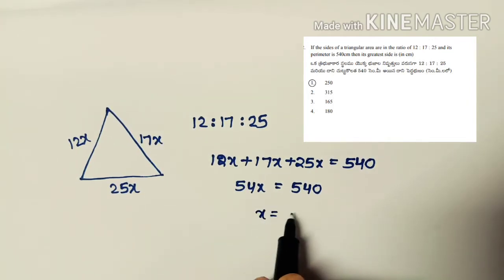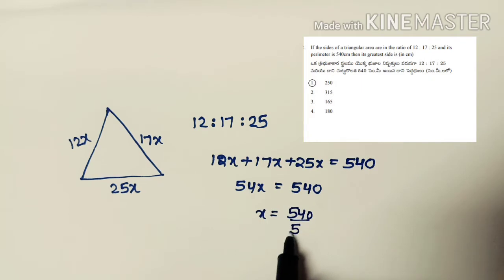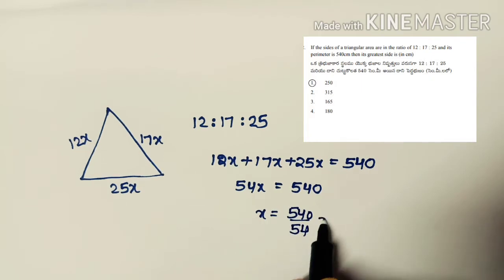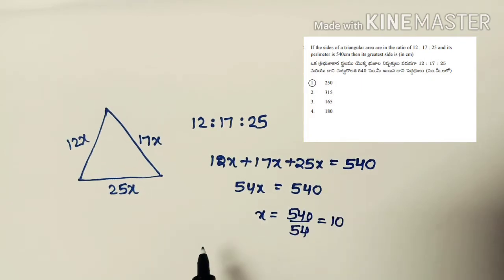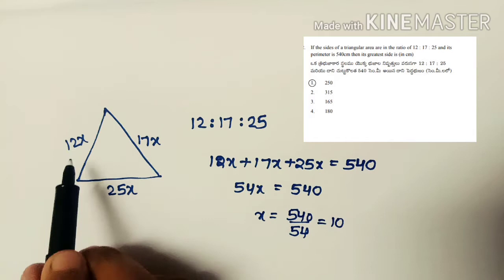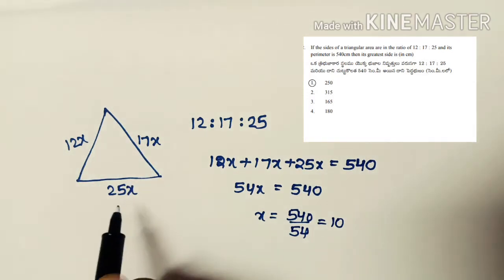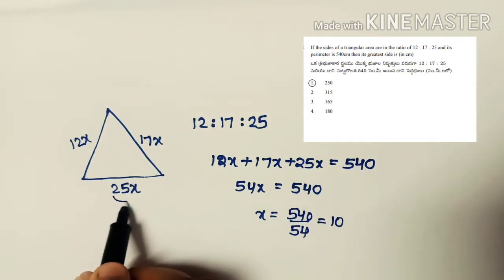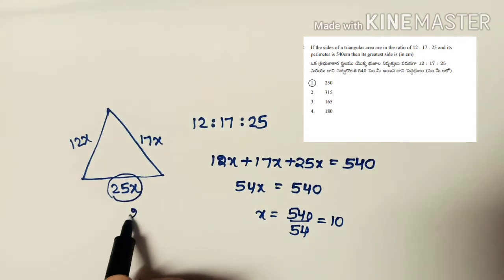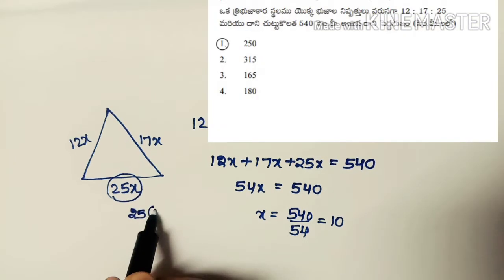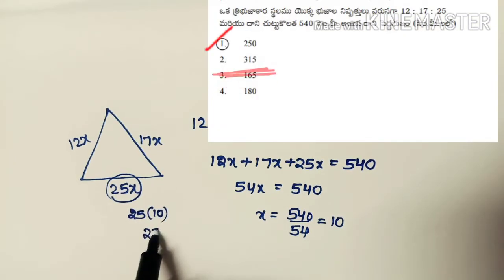So 44x = 540, giving x = 540 ÷ 44 — wait, here 54x = 540, so x = 10. The greatest side is 25x = 25 × 10 = 250, which is the first option.